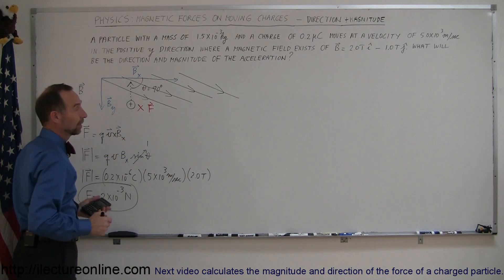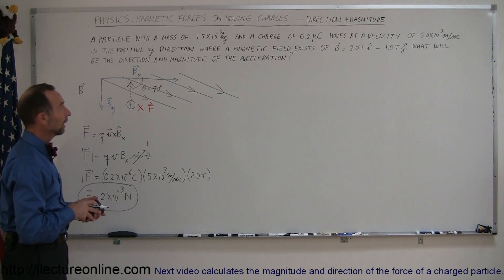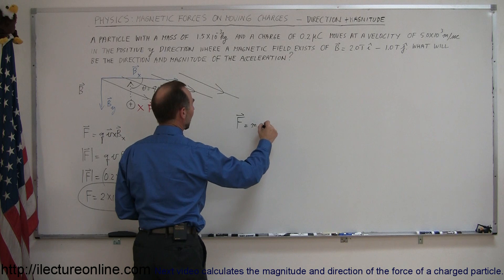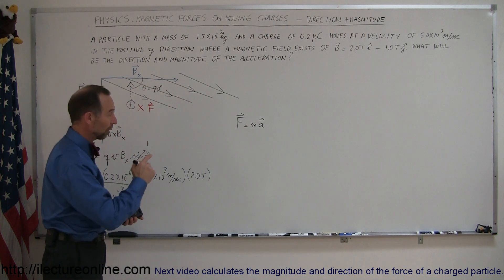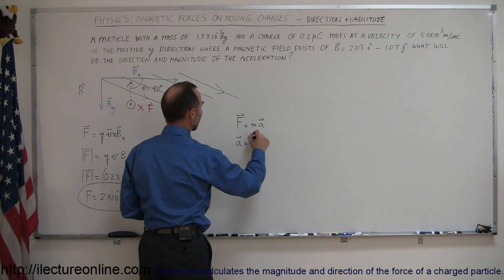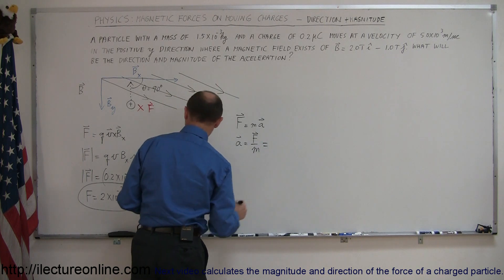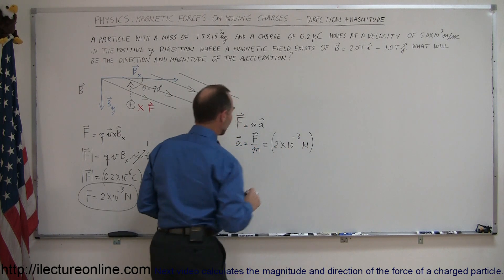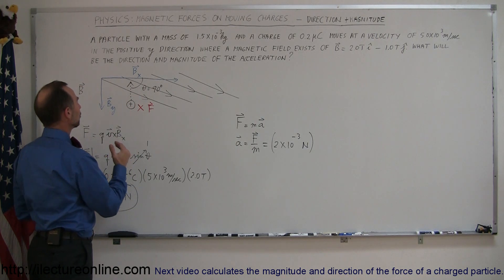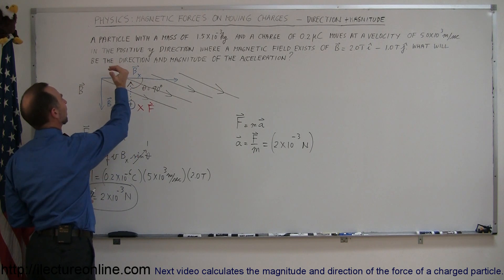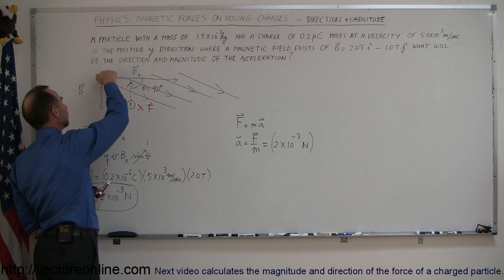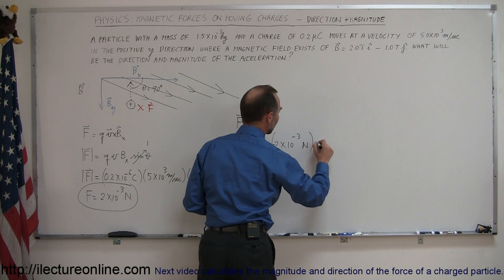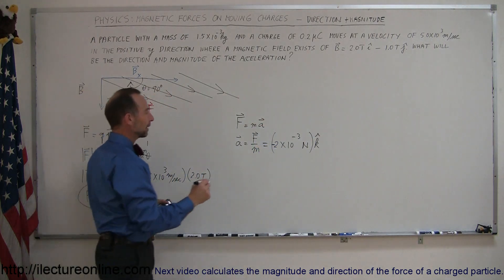So now we know the force and we know the direction. Now we need to find the magnitude and direction of acceleration. Using Newton's second law, F equals ma, solving for A, the acceleration equals the force divided by the mass. The force is 2 times 10 to the minus 3 Newtons, and the direction is into the board — that's the negative z direction. So that would be minus 2 times 10 to the minus 3 Newtons in the z direction. We divide that by the mass, which is 1.5 times 10 to the minus 3 kilograms.